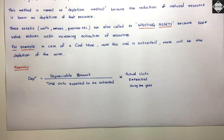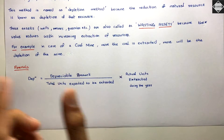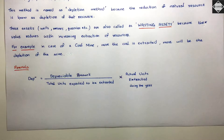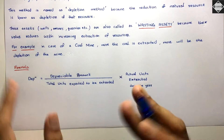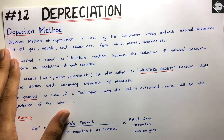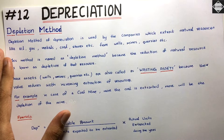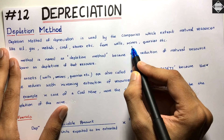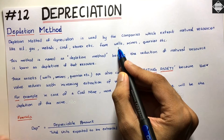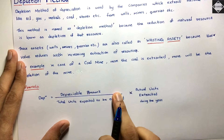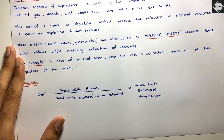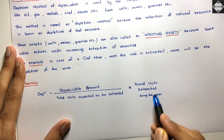In the beginning, scientists and technology help estimate how much coal is in the mine or how many barrels of oil are in the well. You take the depreciable amount, divide by total units expected to be extracted — that gives you depreciation per unit — then multiply that by the actual units extracted during the year.